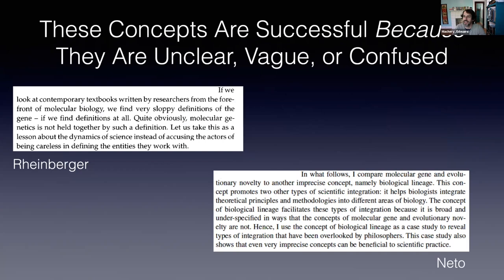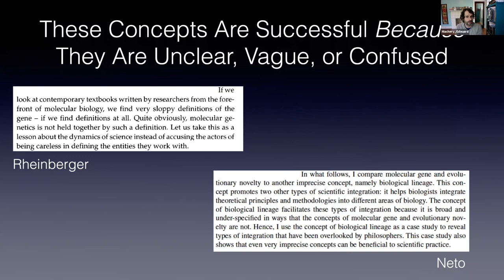The second step of the argument is slightly different: it's the claim that these concepts are successful because they are unclear, vague, or confused. So the first step is that some scientific concepts are unclear, vague, and confused; the second step is a causal claim — they are successful because of those properties. Historians and philosophers of biology have no doubt about these claims. Rheinberger notices that the concept of gene fails any standard of rigor that philosophers might impose on scientific concepts, and says: 'Let us take this as a lesson about the dynamics of science, instead of accusing the actors of being careless in defining the entities they work with.' He calls for an epistemology of imprecise concepts.